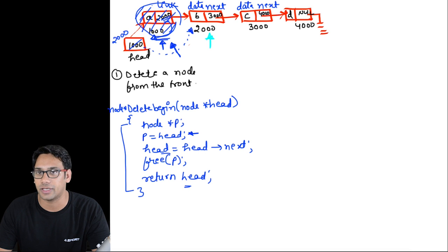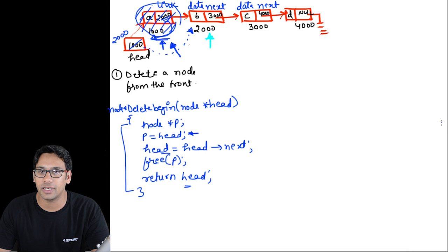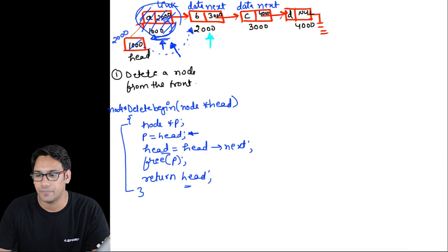Now let us write a program to delete a node from the end of a linked list. To do this, we need to traverse to the end of the linked list. Let us see how to write this program.